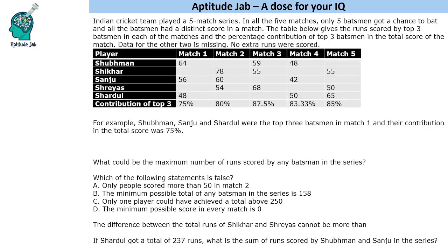Welcome to Aptitude Lab. This is a set based on a missing data table where you need to apply some basic logic. It states that the Indian cricket team played a five-match series; in all five matches, only five batsmen got a chance to bat, and all batsmen had distinct scores in each match. The table gives the runs scored by the top three batsmen in each match and their percentage contribution to the total score. The data for the other two batsmen is missing. For example, Shubman, Sanju, and Shardul were the top three batsmen in match one, with a contribution of 75% to the total score.